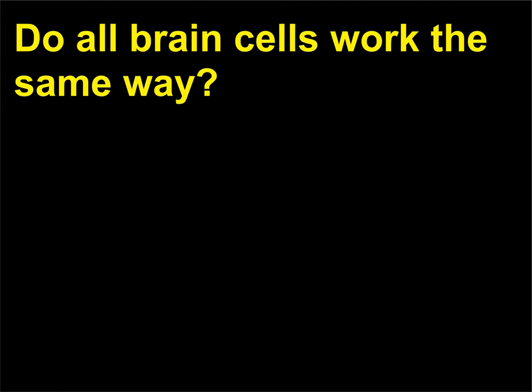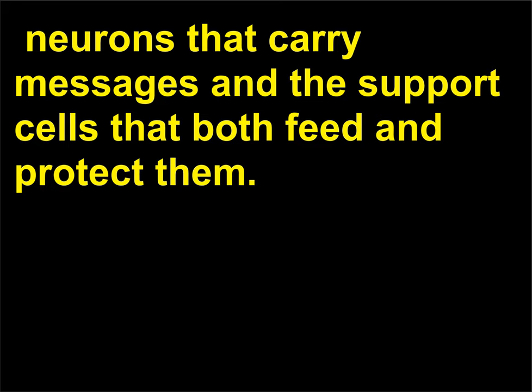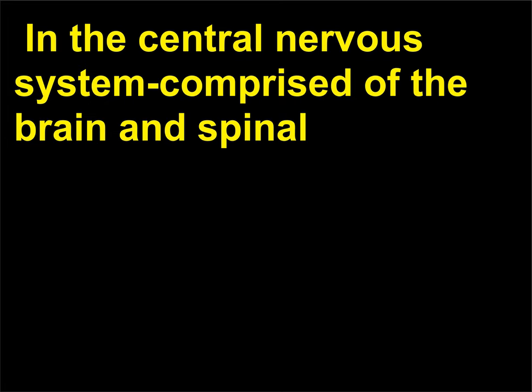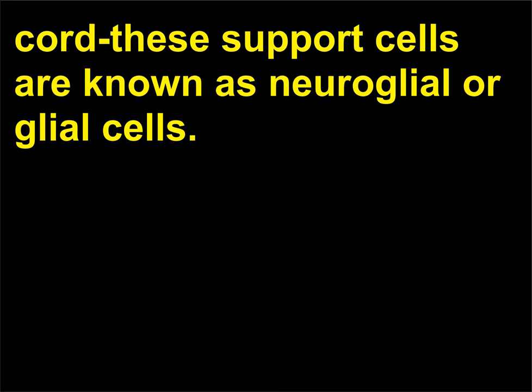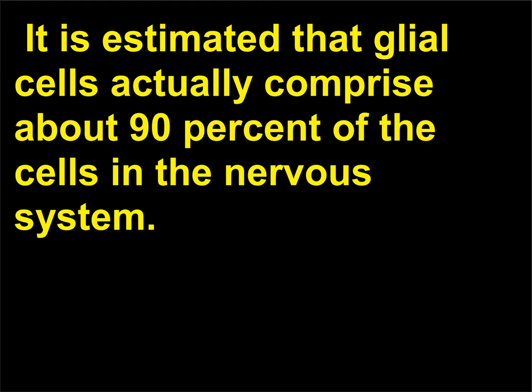Do all brain cells work the same way? There are two basic types of cells in the nervous system: neurons that carry messages, and the support cells that both feed and protect them. In the central nervous system, comprised of the brain and spinal cord, these support cells are known as neuroglial or glial cells. These cells perform a variety of functions in maintaining the health of the neurons of the brain. It is estimated that glial cells actually comprise about 90% of the cells in the nervous system.